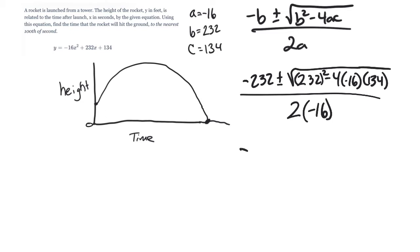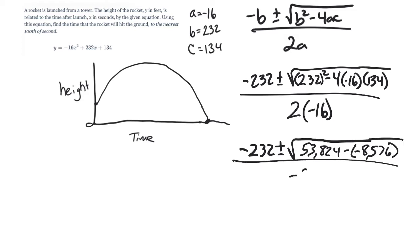Let's go ahead and bring everything down. We've got negative 232 plus and minus the square root. Everybody knows 232 squared in their head, right? You should know it's 53,824. Yeah, I just did that right off the top of my head. You can't see my calculator. Let's see. Then we have 4 times negative 16 times 134. So I want to subtract a negative 8,576. And again, it's all going to be over a negative 32.